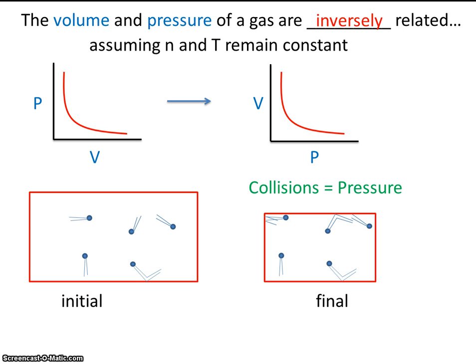Of course, there's an equation for Boyle's Law. It looks like this: P₁V₁ = P₂V₂. These are the initial pressure and volume, and this is the final pressure and volume.